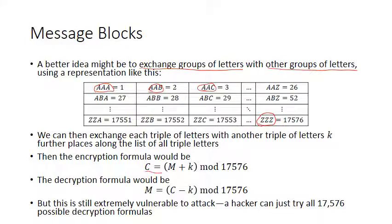Starting with AAA, going to AAB, then AAC, and continuing in alphabetical order until you get to ZZZ — there are 17,576 triples of letters. So your Caesar cipher formula would be the same as before, except you're just modding by a much larger number. Unfortunately, someone with a computer can easily try all 17,576 different decryptions and see which one is English.